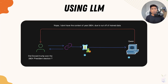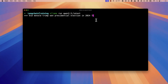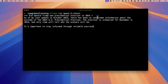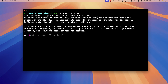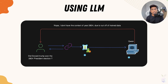If you're going to be using a large language model and asking a question like, did Donald Trump win the 2024 presidential election, using Ollama or your local large language model — if you don't have access to the internet, you will see that the large language model will give you an answer saying it doesn't have the context of year 2024 due to the cutoff of the training dates.